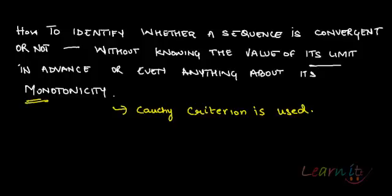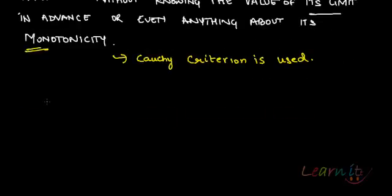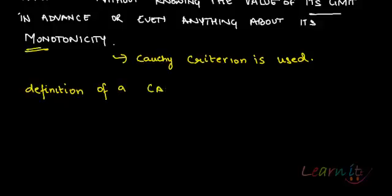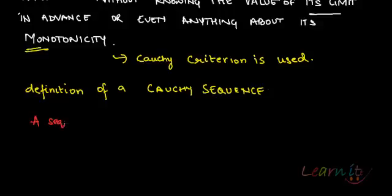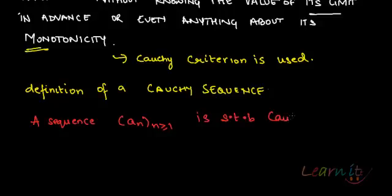This is a video on Cauchy criteria. What does this criteria say? What is a Cauchy sequence? We will be looking at the definition of a Cauchy sequence. A Cauchy sequence is a sequence denoted as usual as a_n, n greater than or equal to 1. This sequence is said to be Cauchy if...